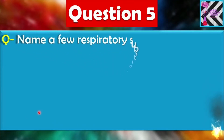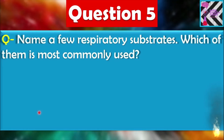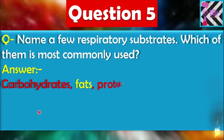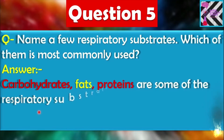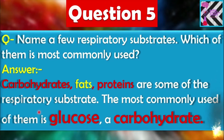Question number five: Name a few respiratory substrates and which of them is most commonly used. Those substances which provide us energy are called respiratory substrates. Carbohydrates, fats, and proteins are some of the respiratory substrates. The most commonly used is glucose, which is a kind of carbohydrate. So if we need energy, we get the most sufficient energy from carbohydrates.